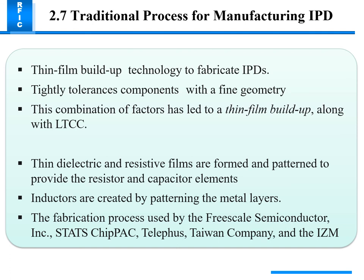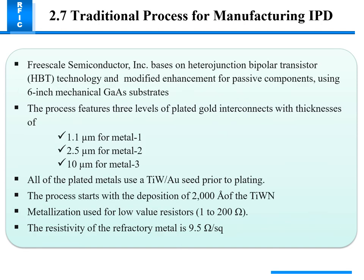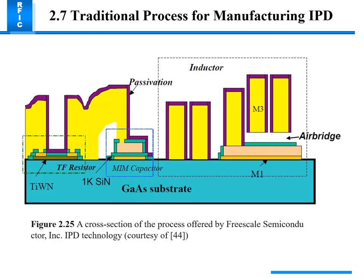Inductors are created by patterning the metal layer. The fabrication process used by Freescale Semiconductor, Telephus, and IMEC is based on a heterojunction bipolar transistor. Process features include 1.1 micrometer for metal one, 2.5 micrometers for metal two, and 100 micrometers for metal three. All plated metal uses TiW and gold seed layers prior to plating. The process starts with 200 angstroms of TiW deposition; metallization is used for low-value resistors with resistivity of 9.5 ohm per square. The Freescale IPD cross-section includes passivation, inductor, air bridge, MIM capacitor, and gallium arsenide surface.